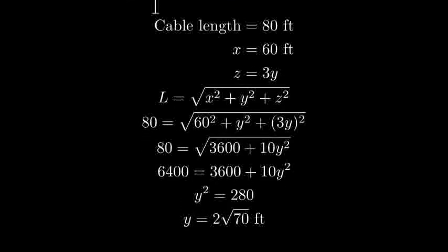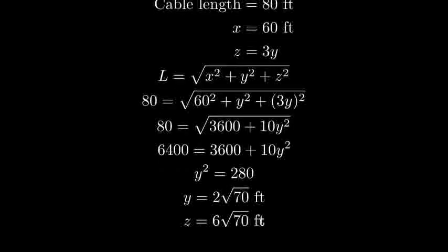Therefore, Y equals 2 times the square root of 70 feet. And since Z equals 3Y, Z equals 6 times the square root of 70 feet.